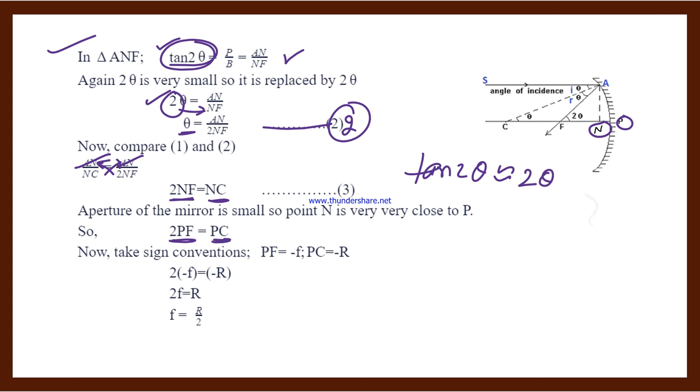So we write 2 PF equals PC. Now we apply sign conventions. The incident ray is above, so first the focus f - so P to F is the focal length, which is small f. Capital F is the focus, small f is the focal length. In optics, we don't use capital F. The center is the radius of curvature, which is capital R.